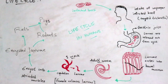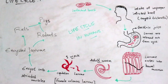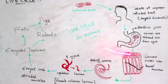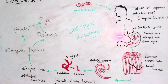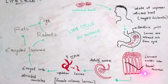The stomach contains gastric juices and pepsin. Due to exposure to these gastric juices and pepsin, the cysts burst open and the larvae are released within the stomach. From the stomach, the larvae enter into the bowel mucosa within two weeks.